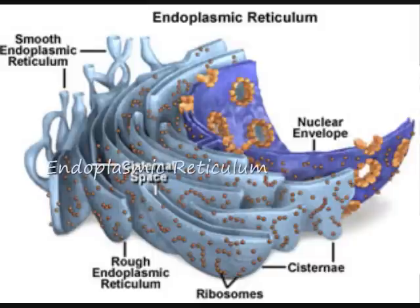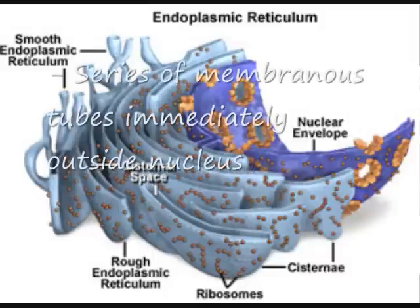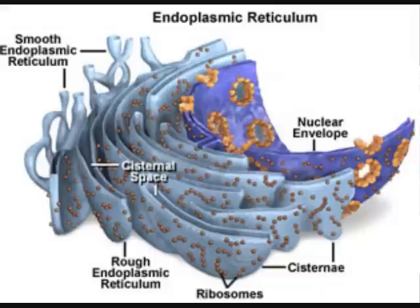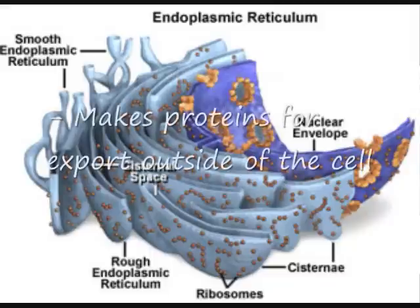The endoplasmic reticulum is a series of membranous tubes immediately outside the nucleus which makes proteins for export outside of the cell.